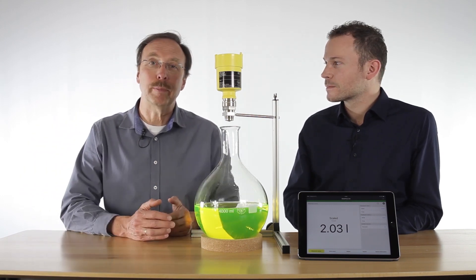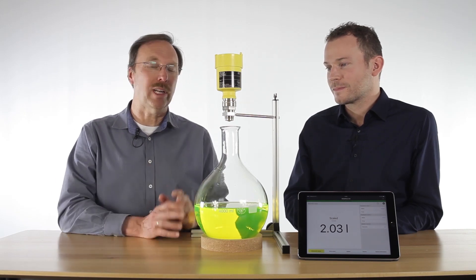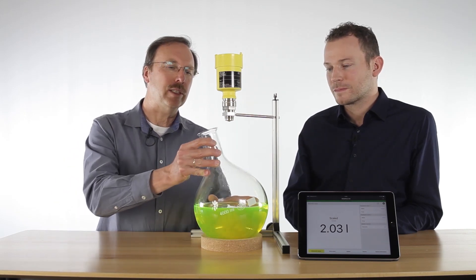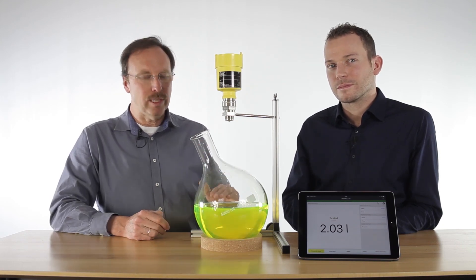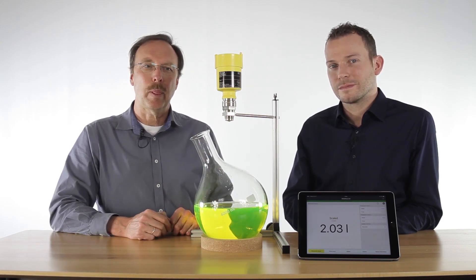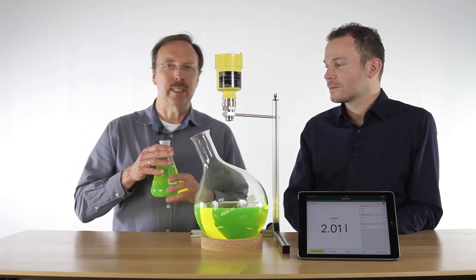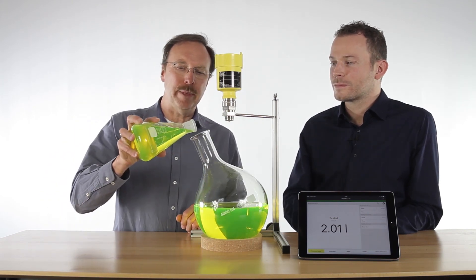Especially if you have toxic materials, it's much better to keep the bottle closed and measure directly through the glass. Even here it's possible to measure the level inside of the glass bottle, and if you change the level, the display will follow immediately.